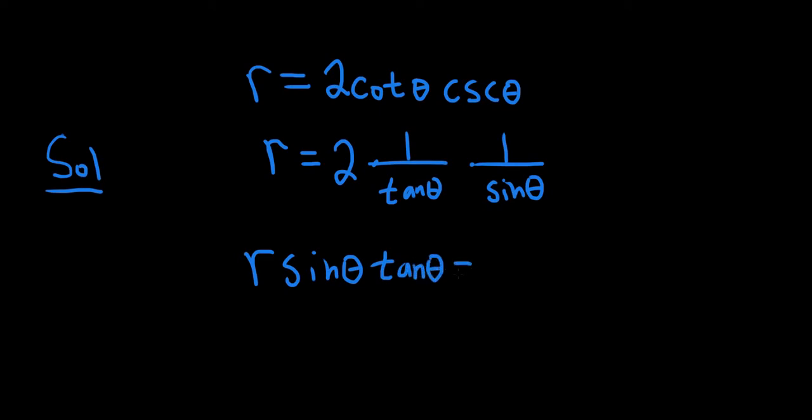And the right-hand side, we'll just get 2. Just multiplying by tangent and sine. And doing the same thing over here, tangent and sine. You see these cancel? Good stuff.